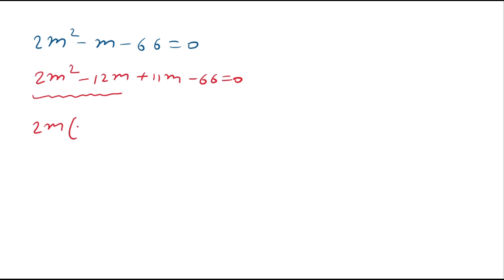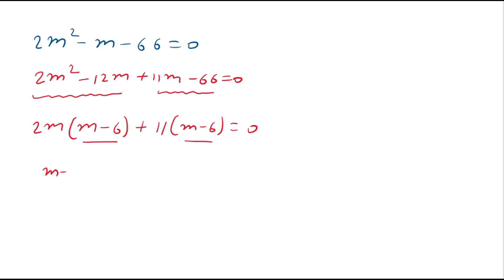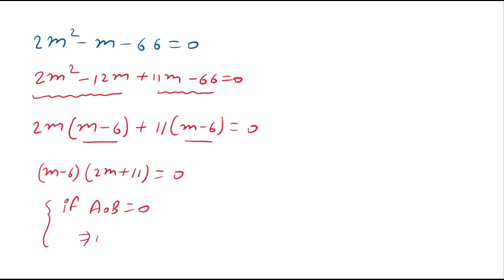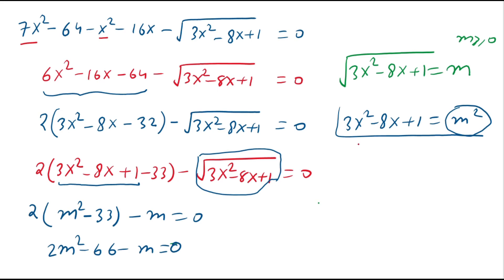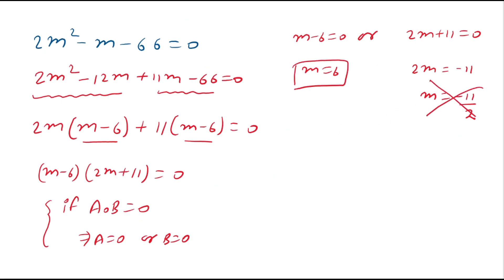Taking common factors: 2m(m minus 6) plus 11(m minus 6) equals 0, so (m minus 6)(2m plus 11) equals 0. Therefore m minus 6 equals 0 or 2m plus 11 equals 0, giving m equals 6 or m equals minus 11 over 2. Since m is greater than or equal to 0, the value m equals minus 11 over 2 is rejected. So our value of m is 6.